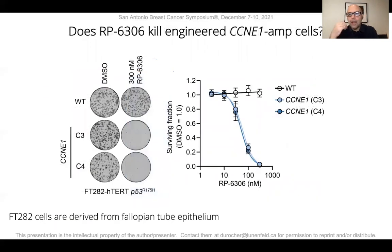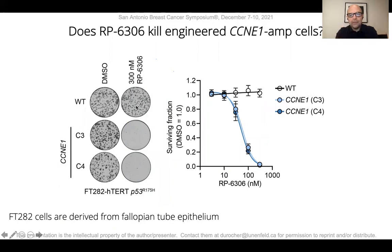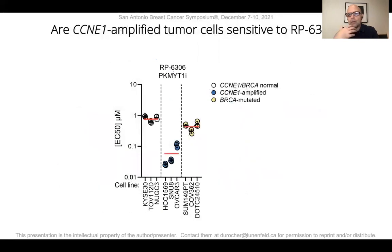Treatment of cells that have high levels of cyclin E — in this case, a fallopian tube model developed by Ronnie Drapkin — recapitulates the genetic interaction between PKMYT1 and cyclin E1 overexpression. Treatment of normal fallopian tube cells with RP-6306 is pretty much innocuous, but is highly cytotoxic in conditions where cyclin E1 is overexpressed. This lethality is also recapitulated in tumor-derived cell lines that have cyclin E1 amplification.